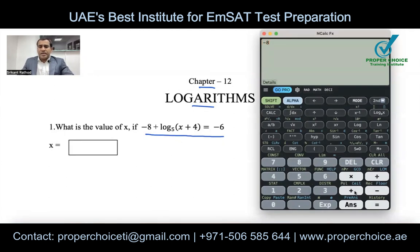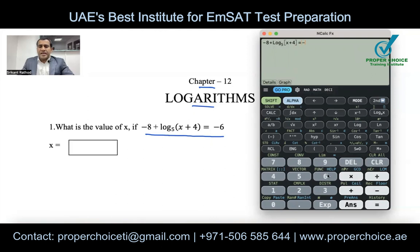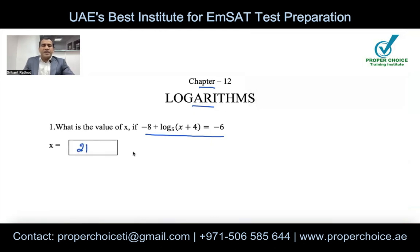On the calculator, there are two logarithm options: one assumes base 10, and another lets you input a custom base. Use the second option and set the base to 5, with (x + 4) in the bracket. Then type equals negative 6, press shift, cal, and equal — the three magical buttons. You'll get x = 21. Regardless of whether it's log, ln, or e to the power x, use the calculator this way.